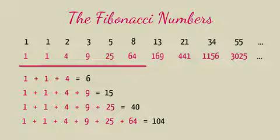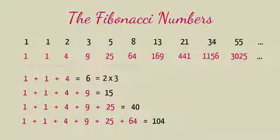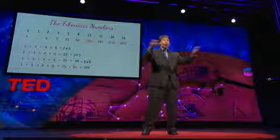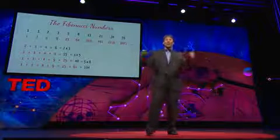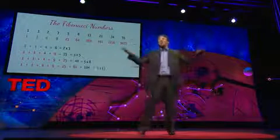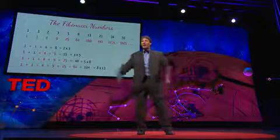You see it? I'll show you: 6 is 2 times 3, 15 is 3 times 5, 40 is 5 times 8. The factors are 2, 3, 5, 8 — Fibonacci numbers. Who do we appreciate? Fibonacci, of course.